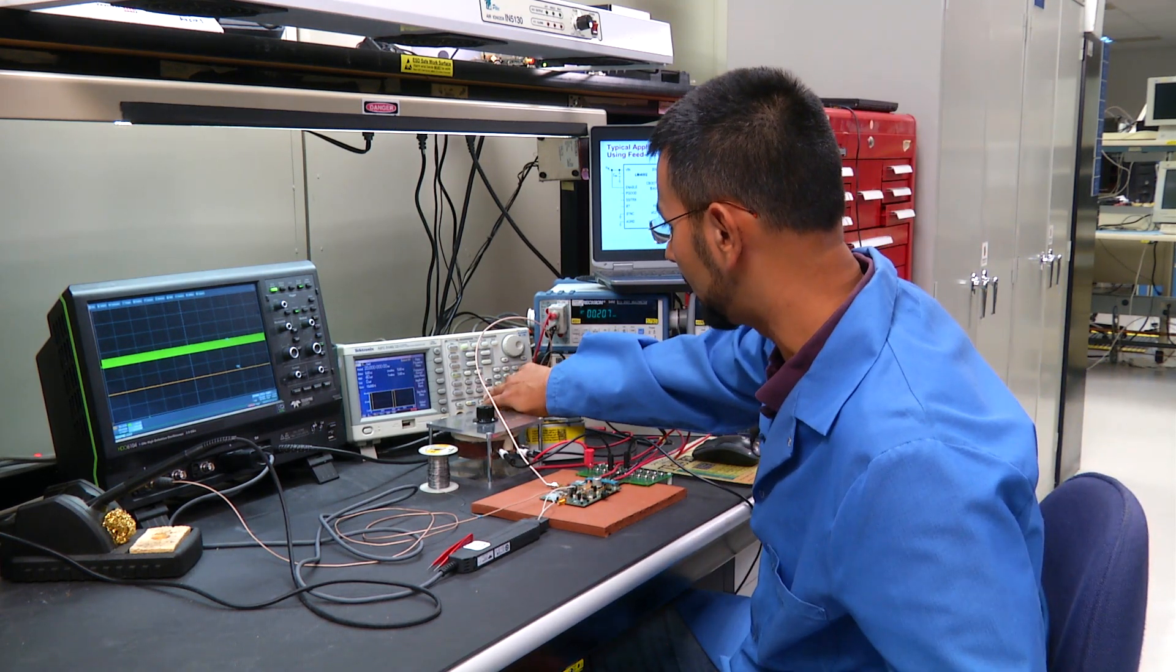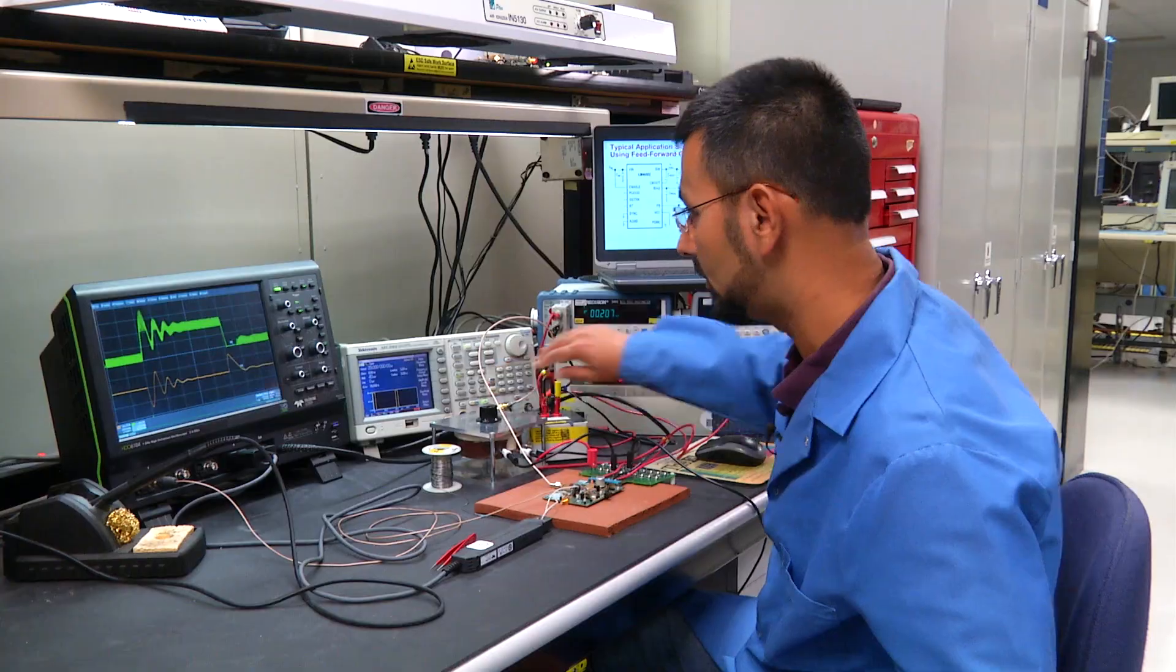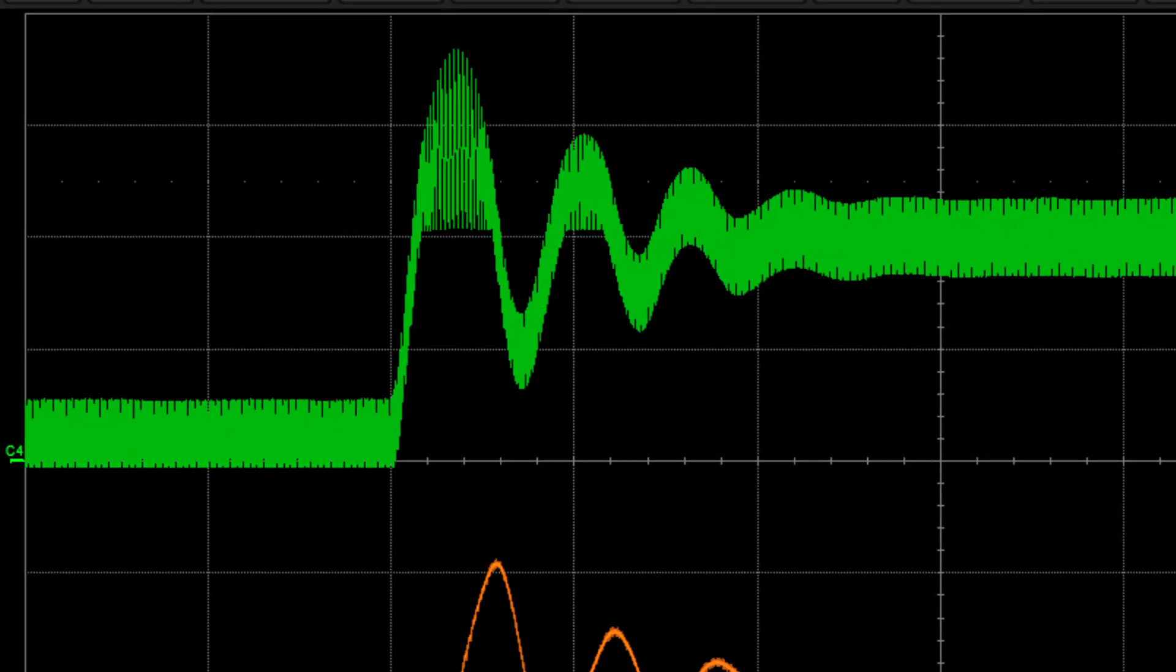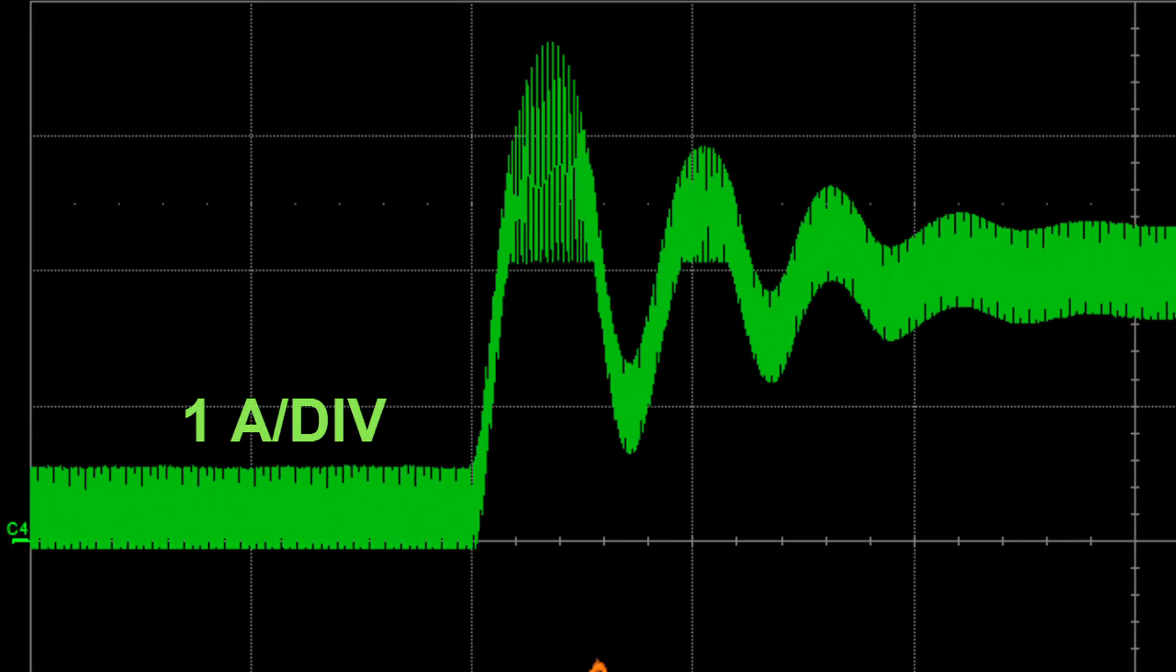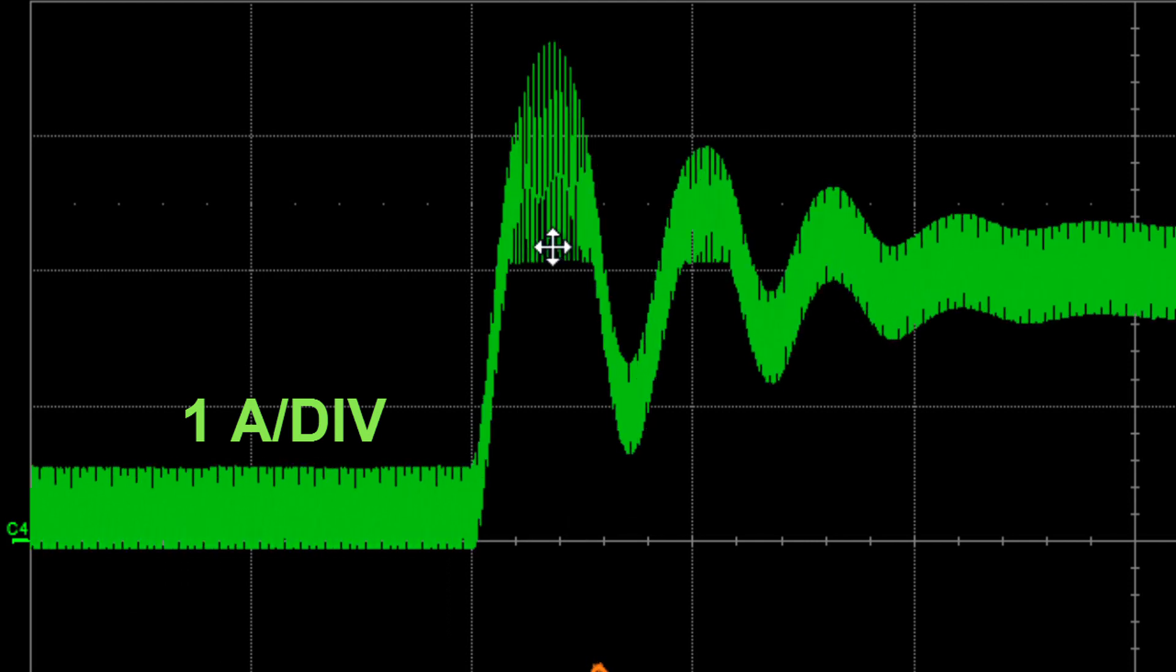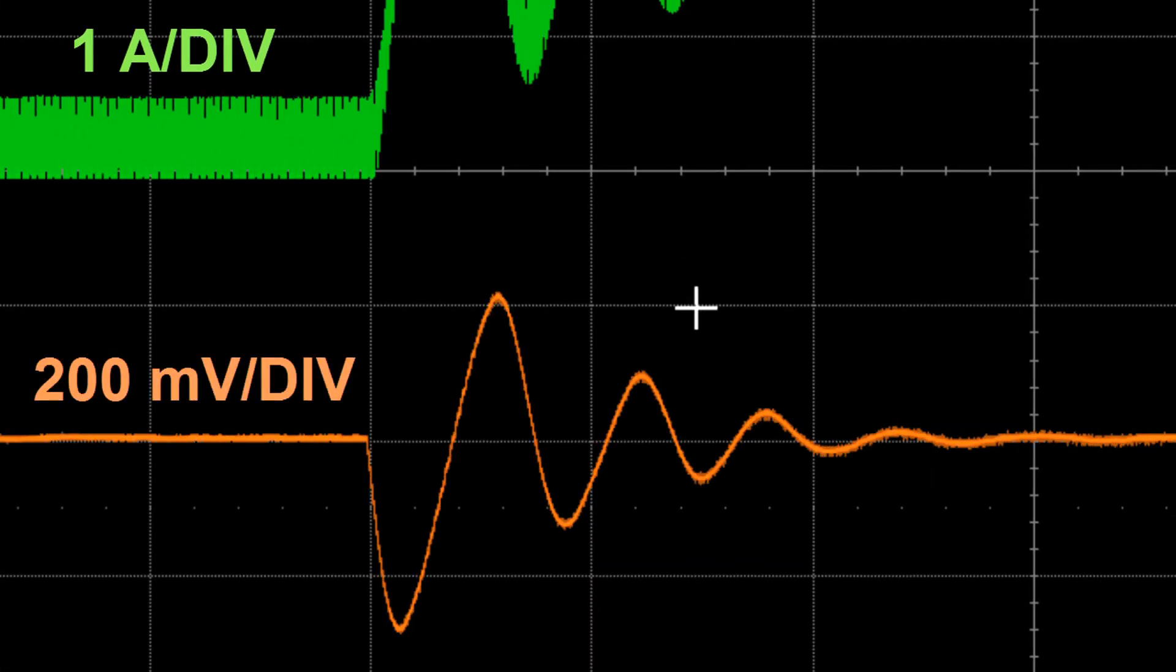I'm going to turn on the function generator and as you can see now the inductor current is pulsing from 200 milliamps to 2 amps and the output voltage responds to the load transient with a few rings.